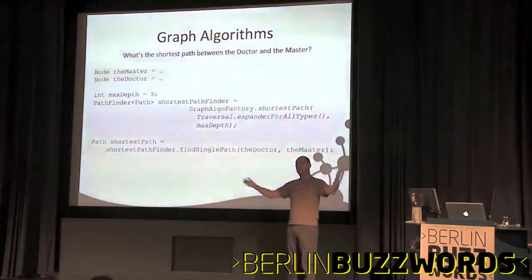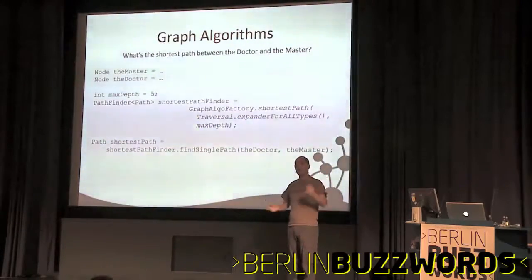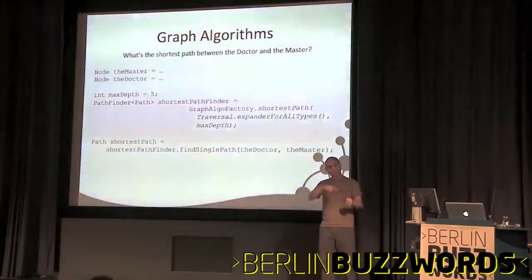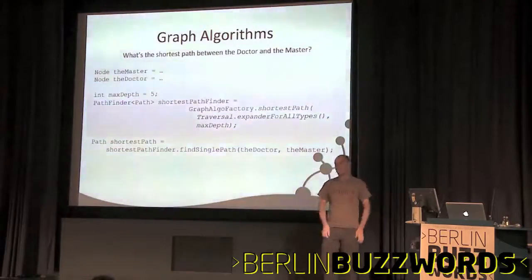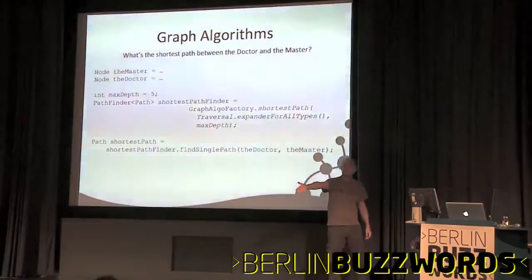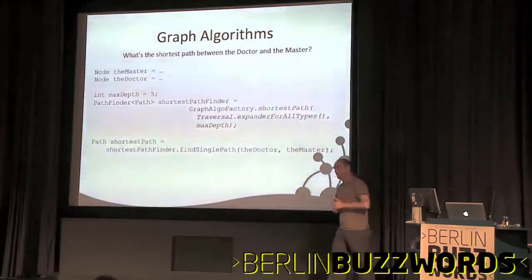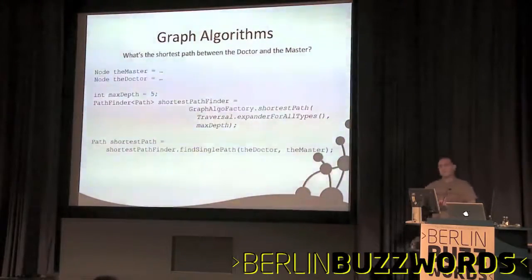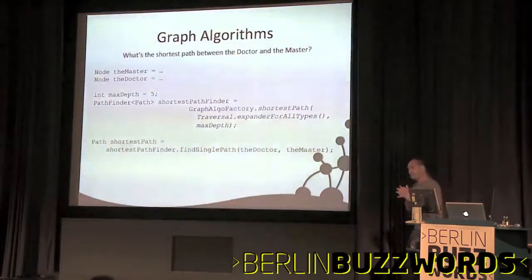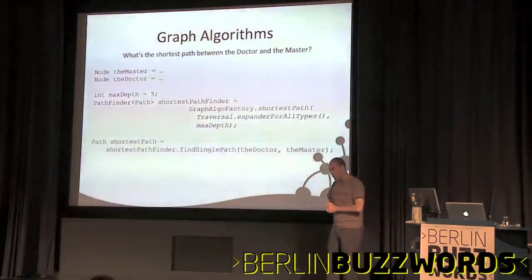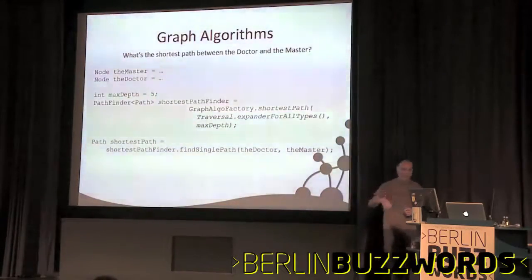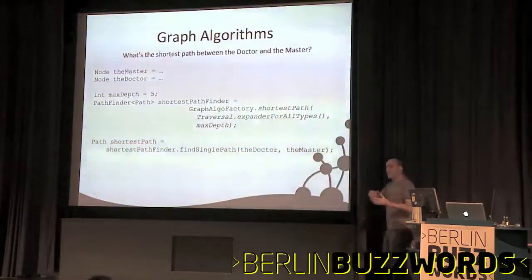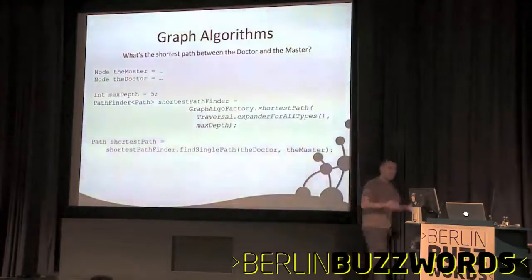You can express that kind of exploration with a graph algorithm. In a graph database, you can bring all of those graph algorithms - things like weighted path algorithms, pattern matching - to bear on your problem. For example, in Doctor Who, you might want to find out what the most important characteristic of the relationship between the Doctor and the Master is. By using a graph algorithm, you can ask for the shortest path between them. In my data set it turns out that's a path of length one, and the relationship is called 'enemy of'. So the most important thing between those guys is that they really hate each other.